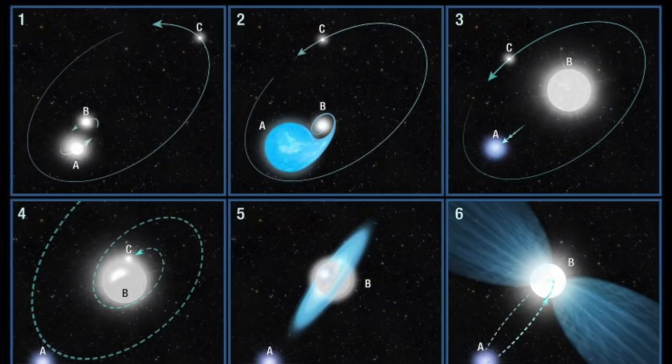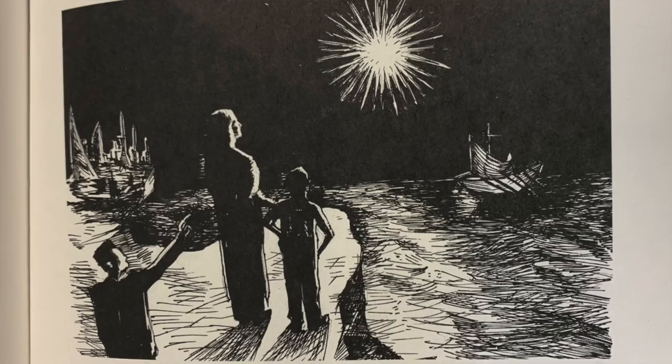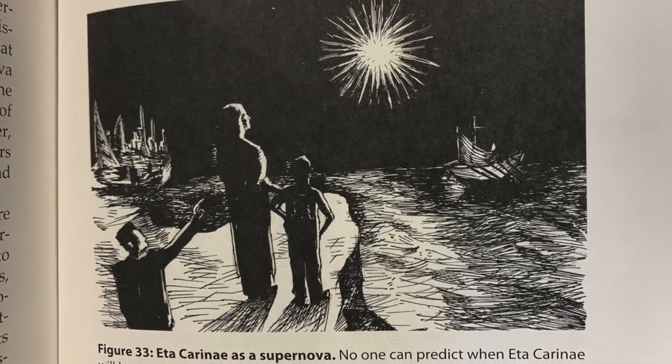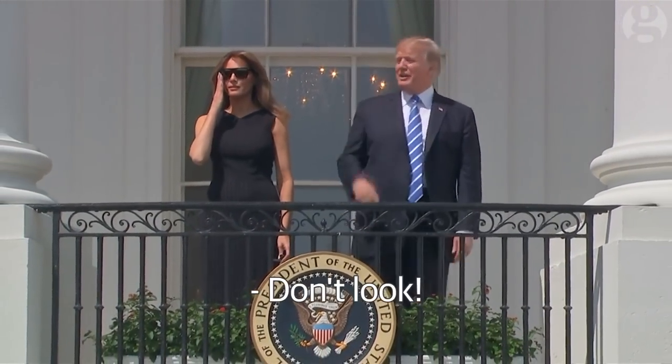If that wasn't cool enough, all the models are telling us that Eta Carinae is about to explode. We can't say when, but it could be in the next million years, this decade or even tomorrow. If it does, it will be the brightest supernova ever seen on Earth with a magnitude of negative 22. Minus 22.